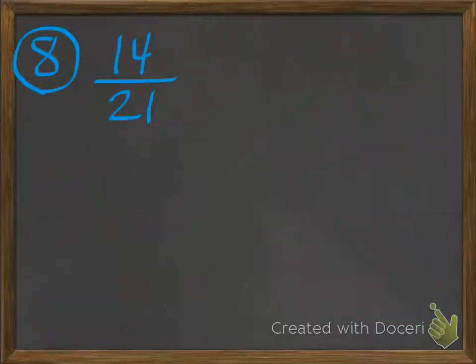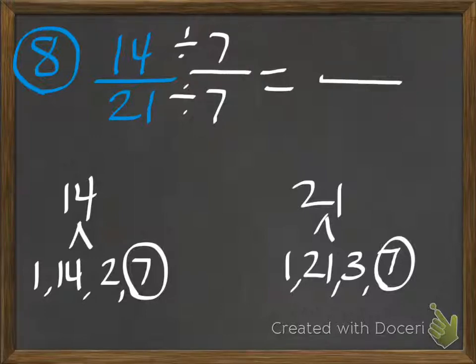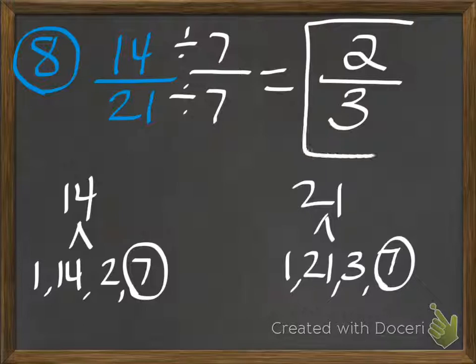Number 8: 14 twenty-firsts. You should have found all the factors of 14 and 21 and seen that the greatest common factor is 7. So I'm going to divide both 14 by 7 and 21 by 7. 14 divided by 7 is 2, and 21 divided by 7 is 3. So 2 thirds is the simplest form.